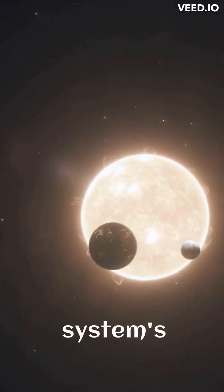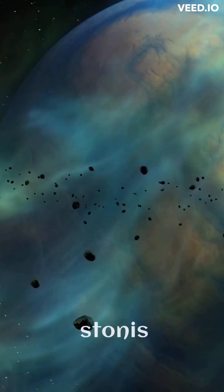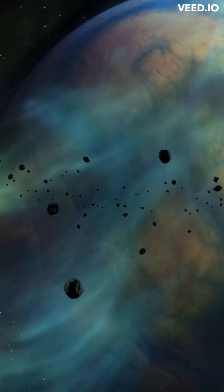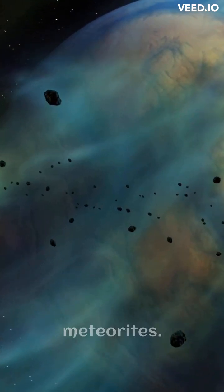There are three major types of meteorites: the irons, the stonies, and the stony-irons. Irons are heavier and easier to distinguish from Earth rocks than stony meteorites.